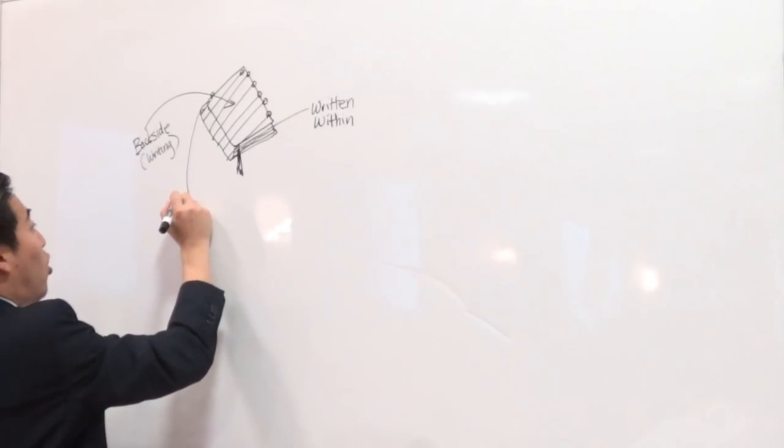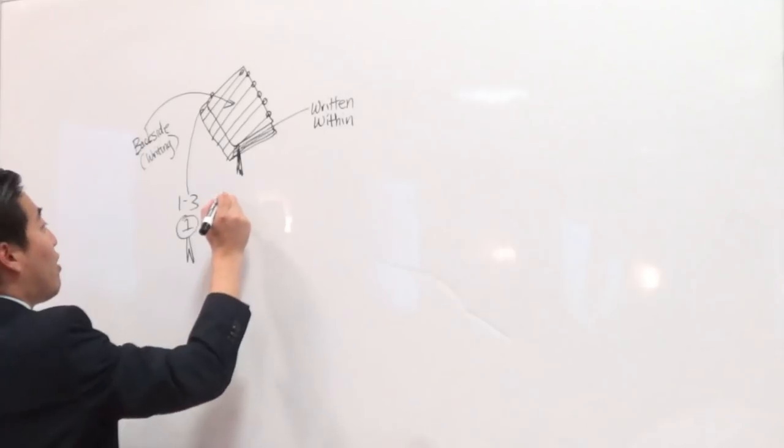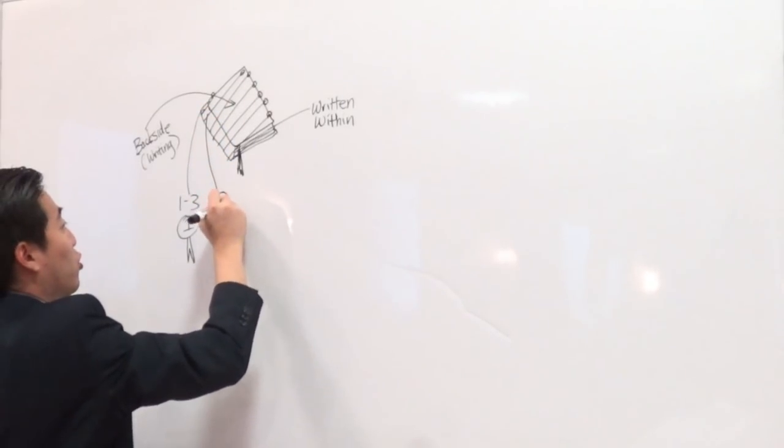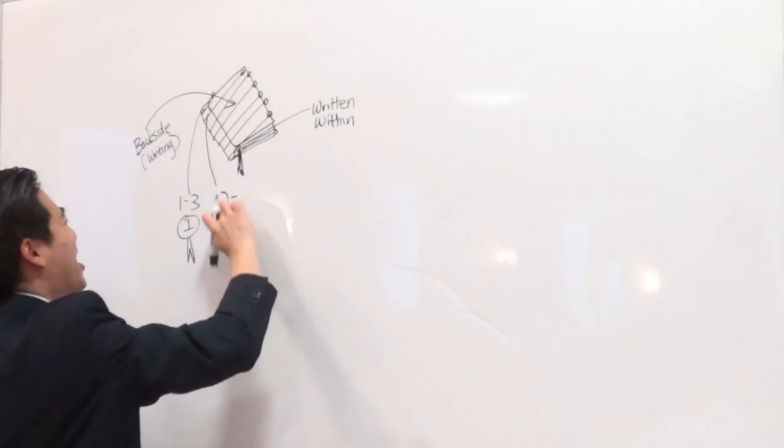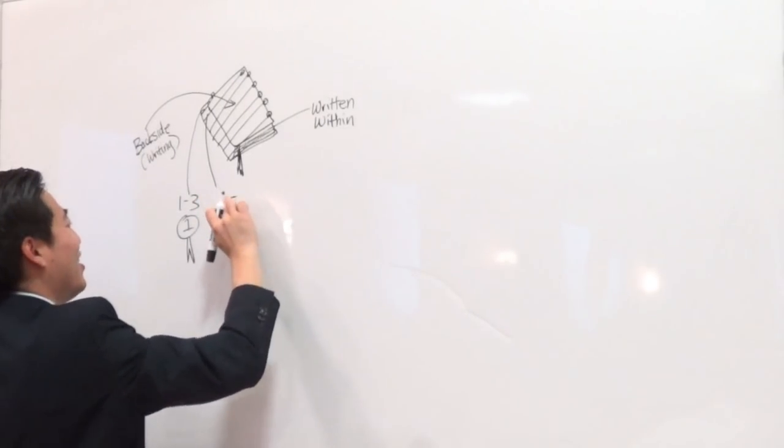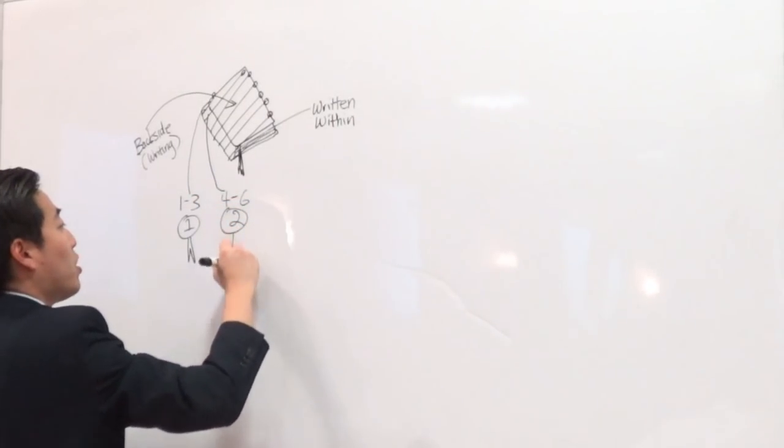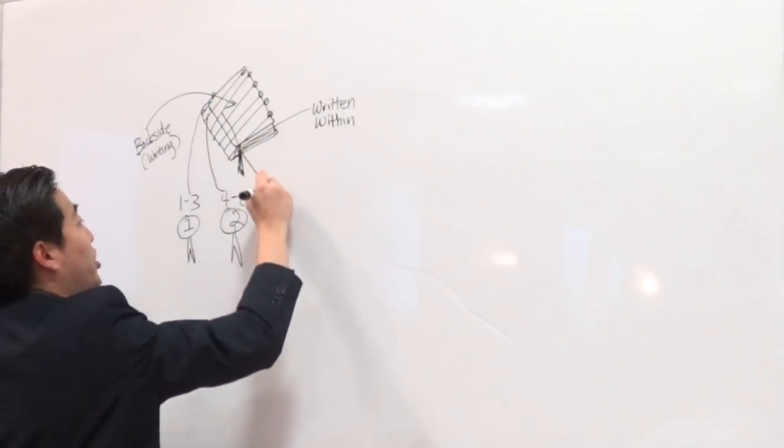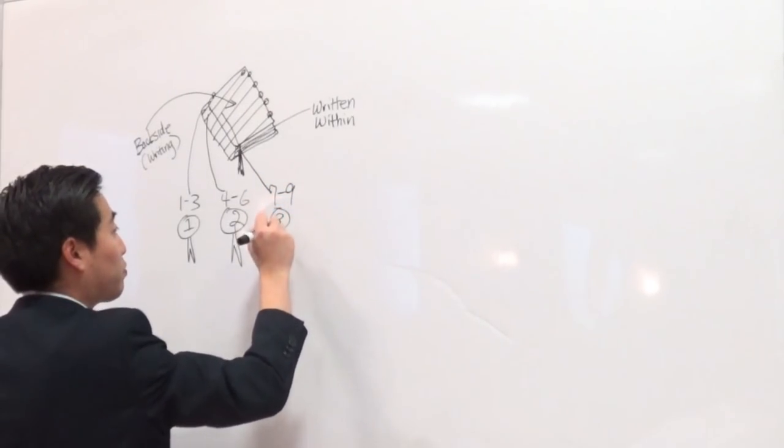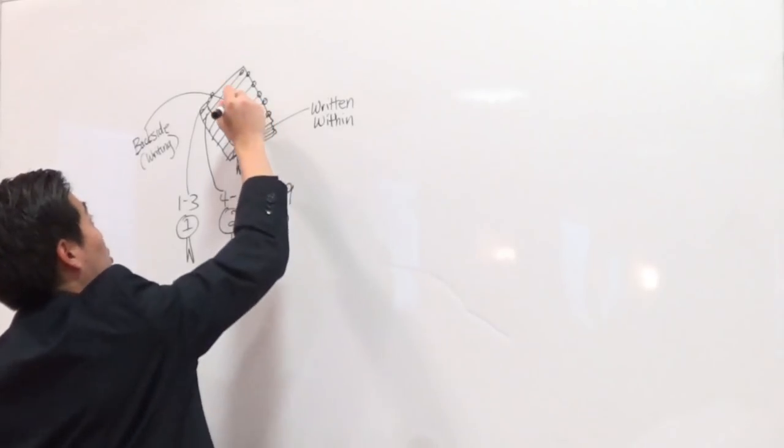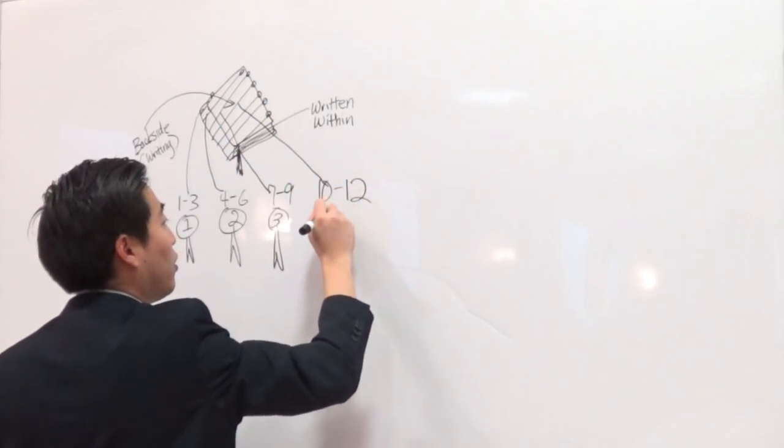So let's pretend this is the back. Now written within and written on the back side as well, there's writing in this book of Revelation. So if we're going to divide it with the seals, then it can go like this: Revelation chapter 1, 2, and 3, first seal. Then Revelation chapter 4, 5, 6, second seal. Then you go to the third seal, 7, 8, 9.